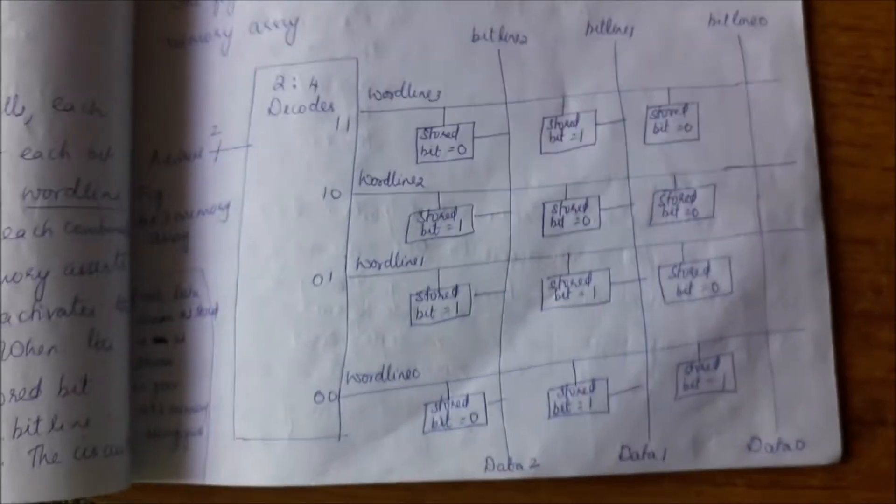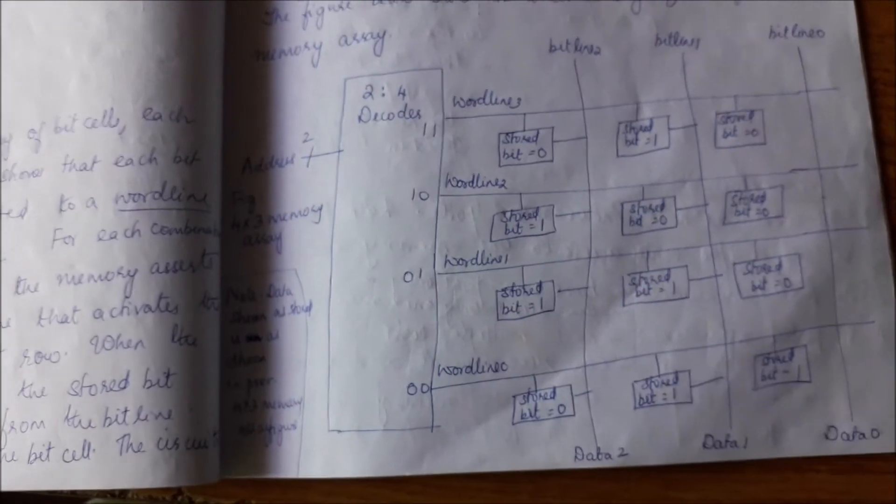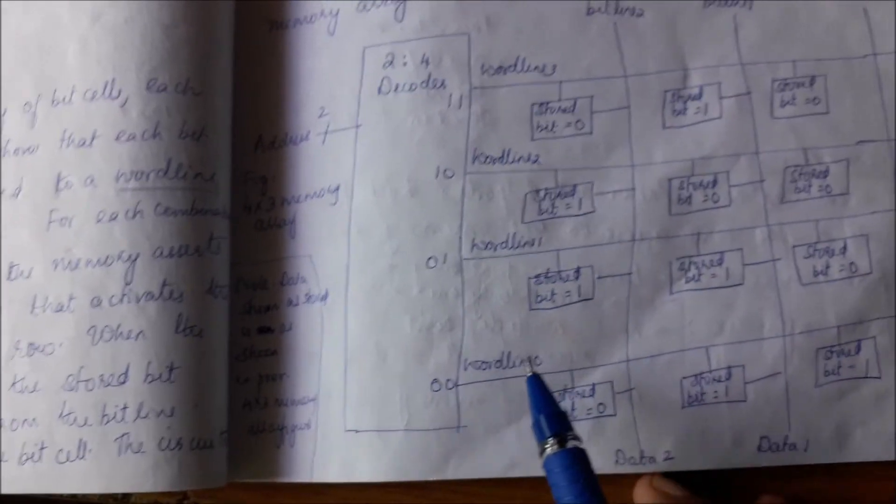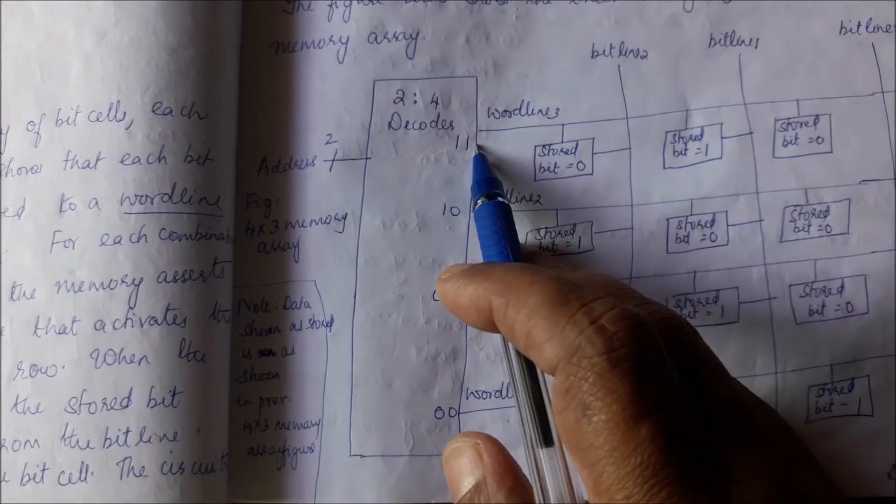Now if you look at how the structure of a memory is, let us say we are going to take a memory that has got 4 words. It is the same thing like you saw before. So you have word 0, word 1, word 2, and word 3.